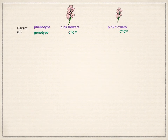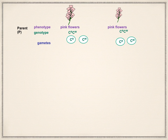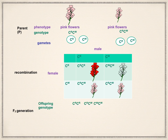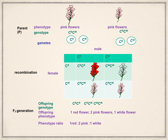If you cross the pink flowers with each other — allowing them to self-pollinate — write down the parents' phenotype and genotype: phenotype is pink flowers; genotype is C superscript R, C superscript W. Write down the gametes and use the Punnett square. You'll get one red flower, one white flower, and two pink flowers in the F2 generation. Genotypes: C^R C^R, C^R C^W, C^R C^W, C^W C^W. Phenotype ratio is 1 red : 2 pink : 1 white.